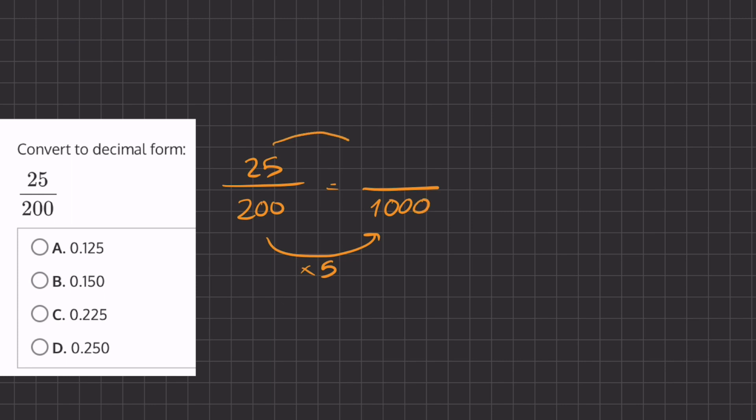Now if we multiply the denominator by 5, we'll also multiply the numerator by 5. And 25 multiplied by 5 is 125.